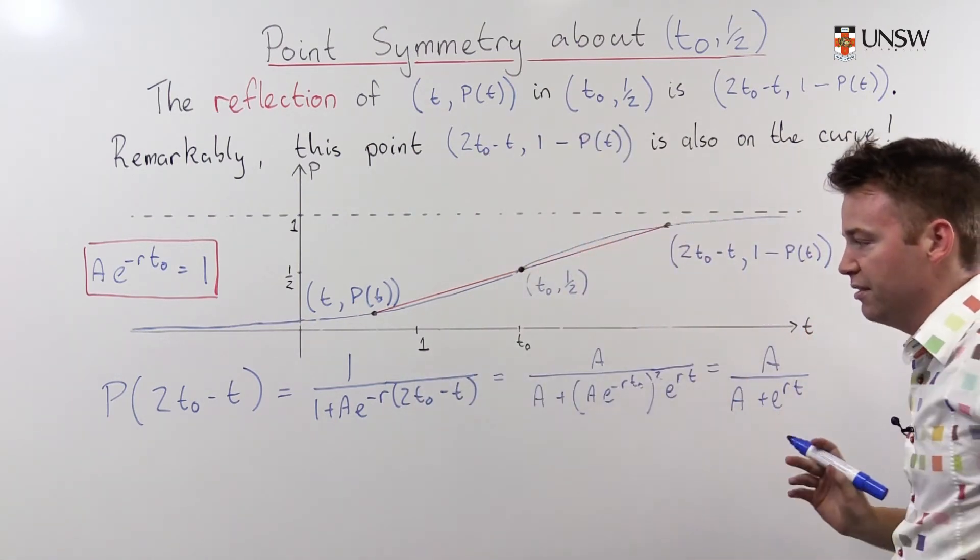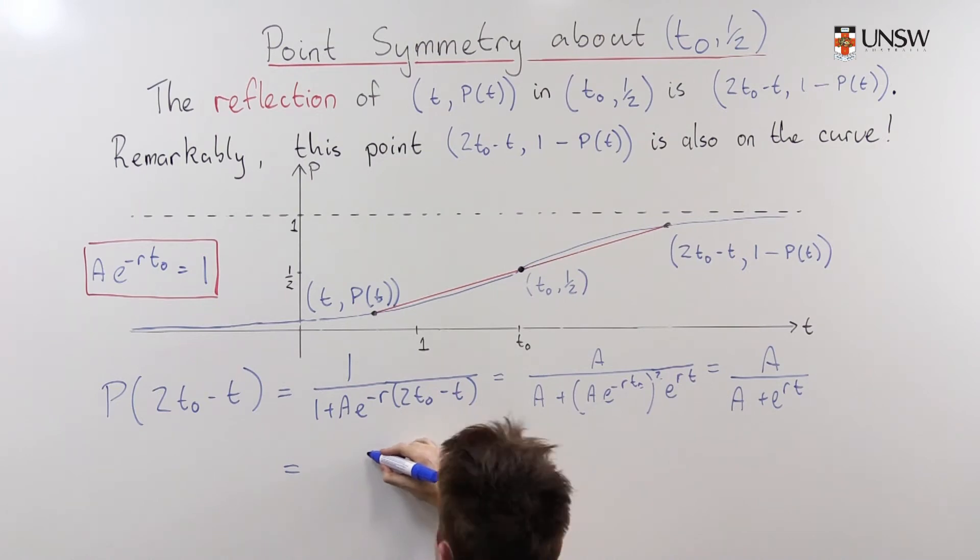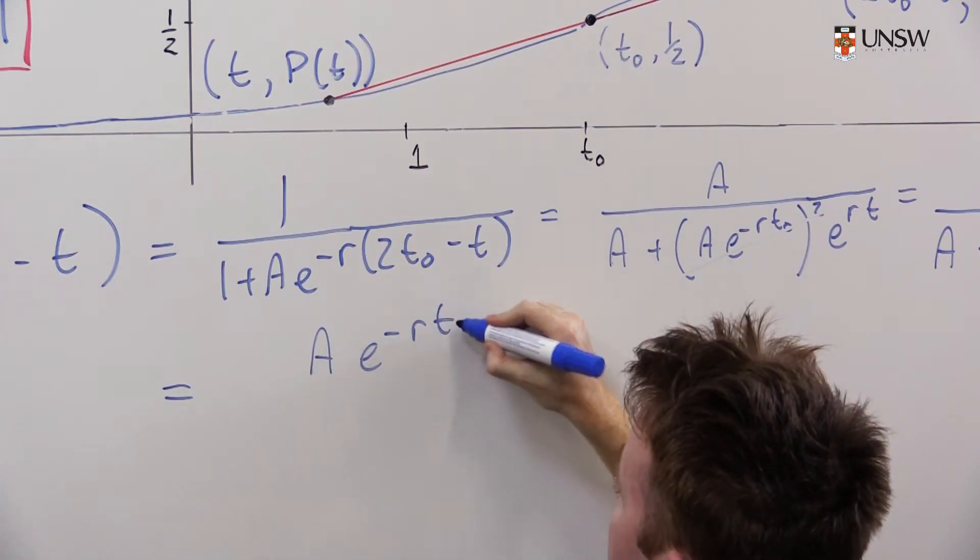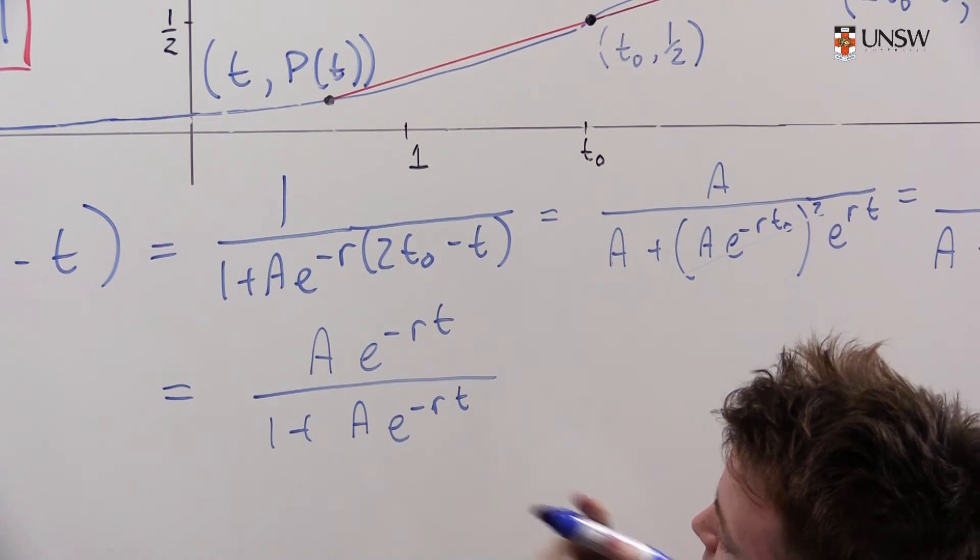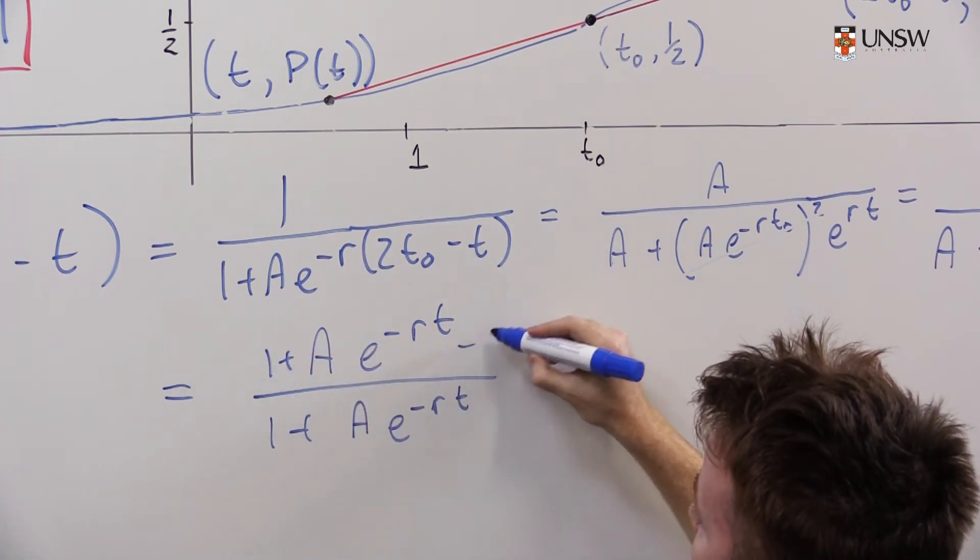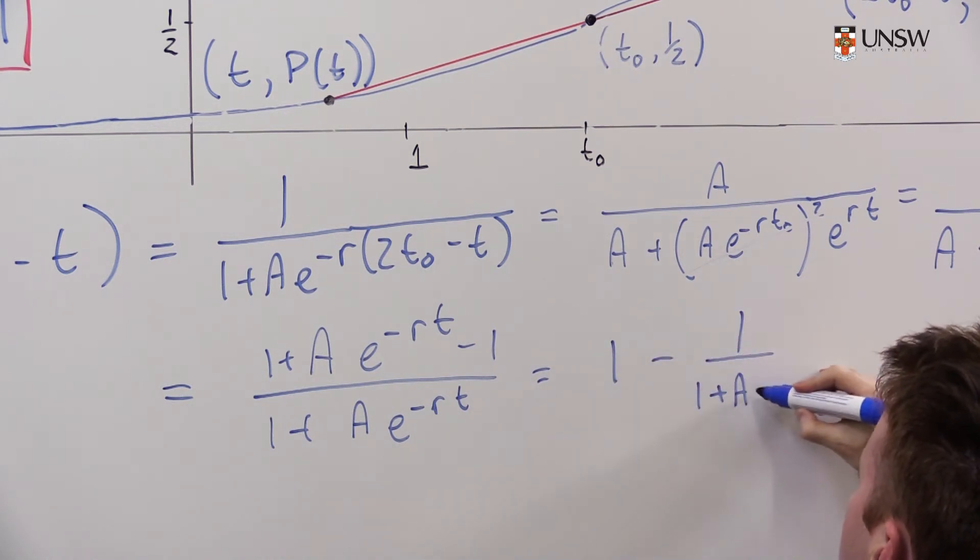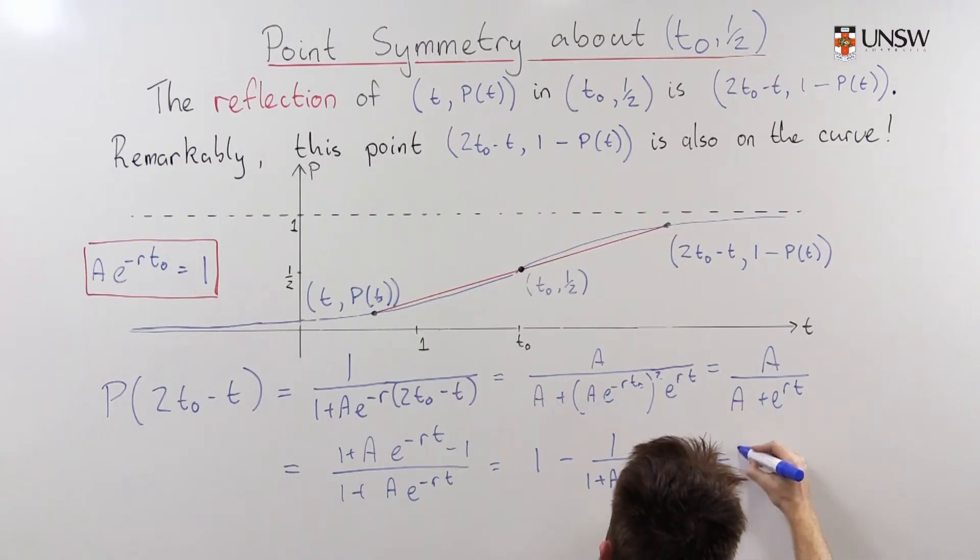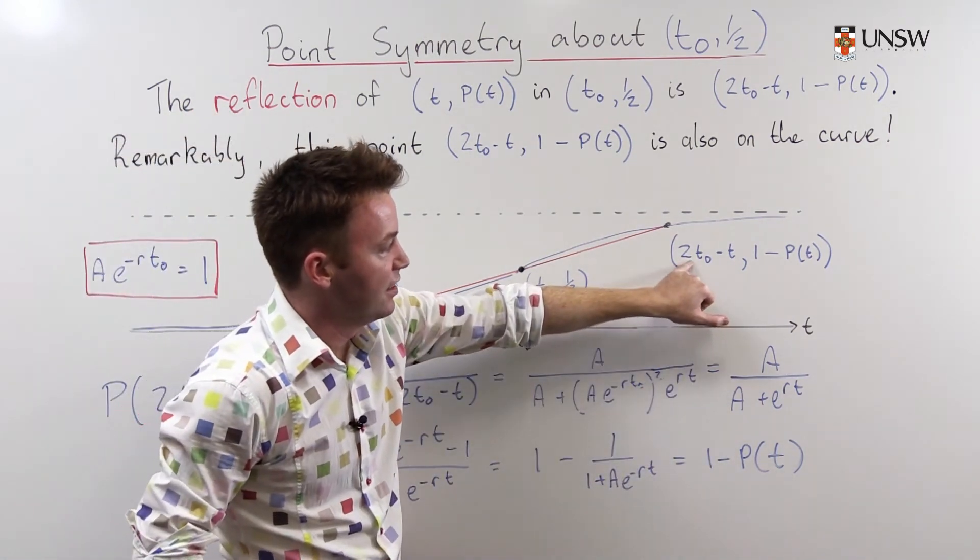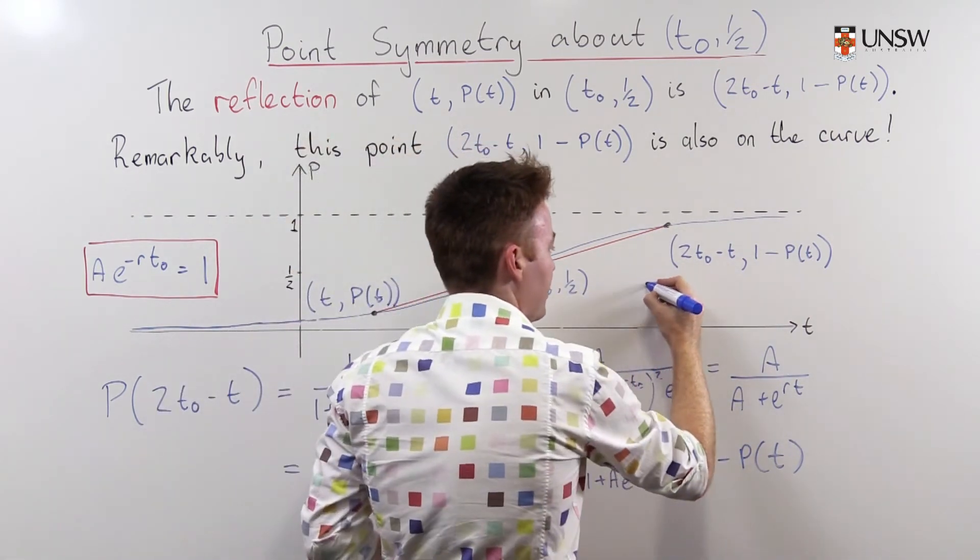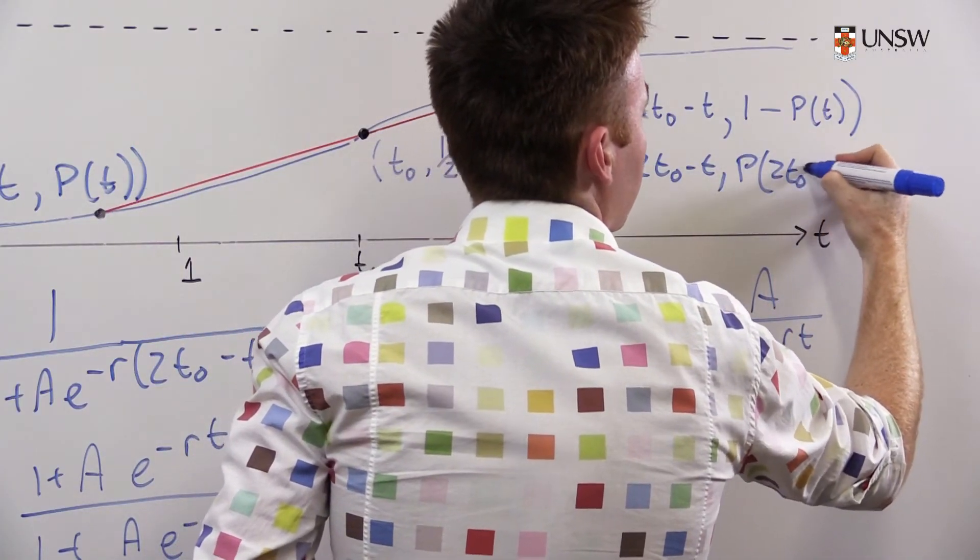And I can clean this equation up using a fact that we stashed away from earlier, that ae to the negative rt0 is just 1. So this stuff in here goes away. And we have a over a plus e^(rt). And I will take this equation here and multiply the top and bottom by e to the negative rt. And that will give me ae to the negative rt over 1 plus ae to the negative rt. And if I add 1 here and minus 1 here, then I get 1 minus 1 over 1 plus ae^(-rt), which is 1 minus P of t.